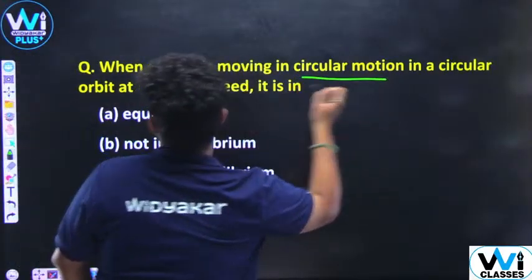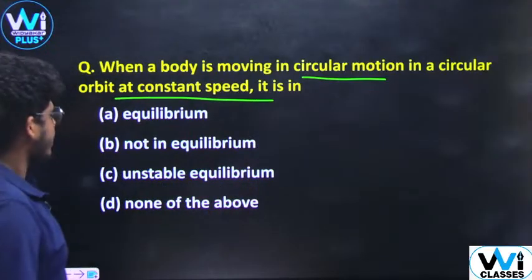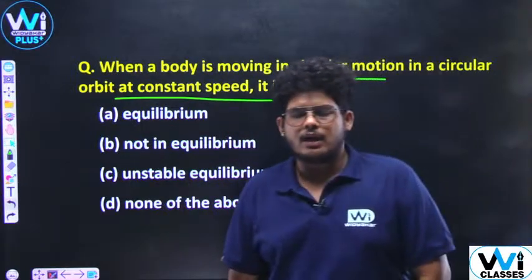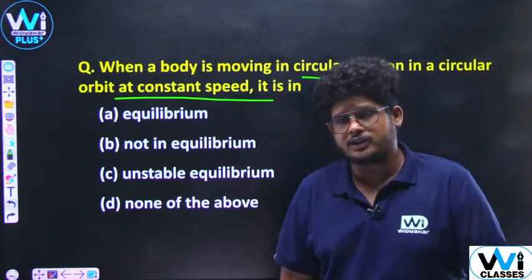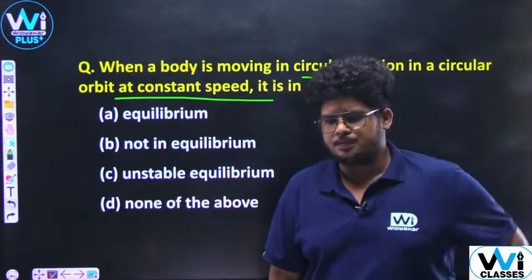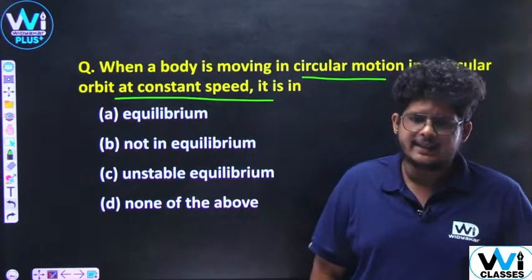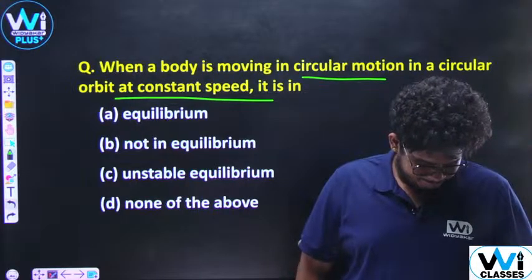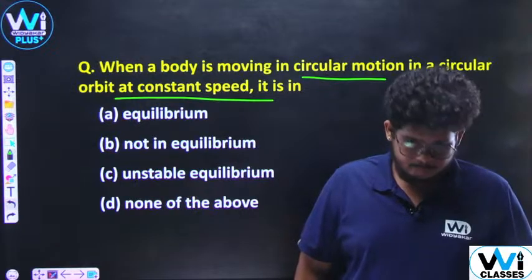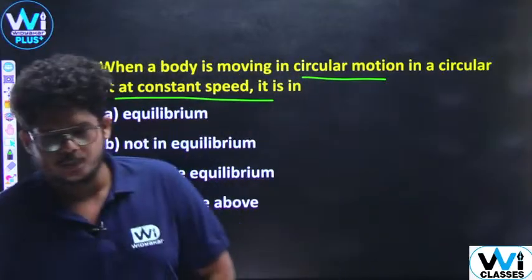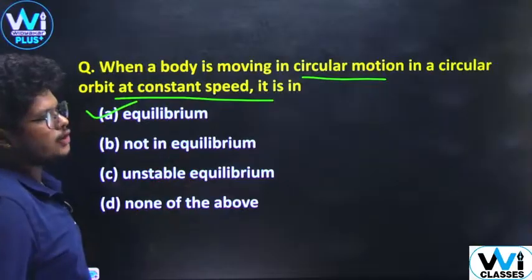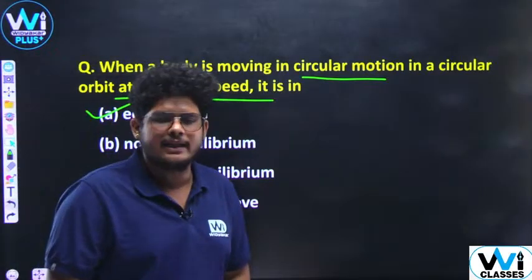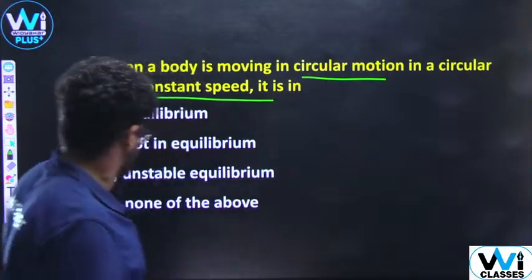Next question: When a body moves in a circular orbit at constant speed, is it in equilibrium, not in equilibrium, unstable equilibrium, or none of the above? The correct answer is: the body is dynamically in equilibrium. In uniform circular motion, the body is dynamically in equilibrium.